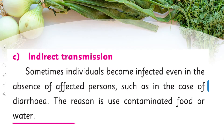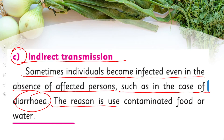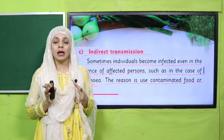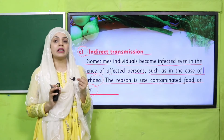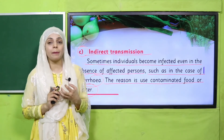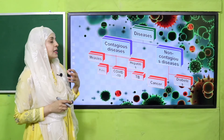Indirect transmission: sometimes individuals become affected even in the absence of an affected person. Such is the case with diarrhea. The reason is the use of contaminated food or water. So even if an affected person is not near you, eating food or drinking water that contains germs can still make you ill.